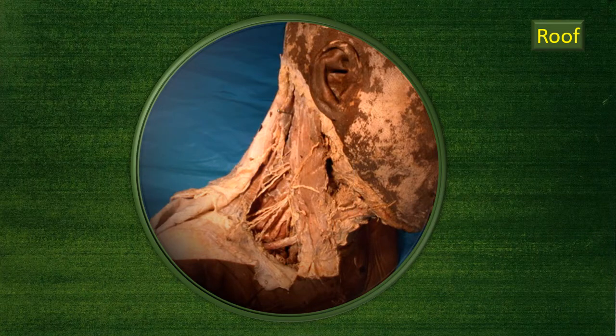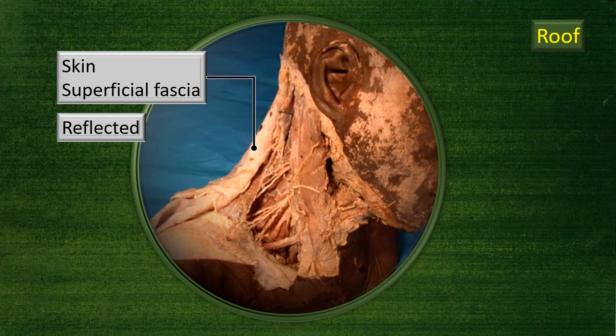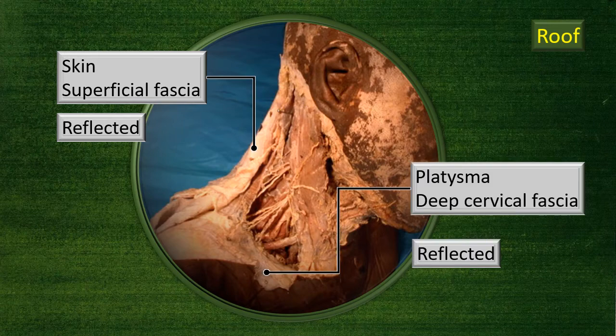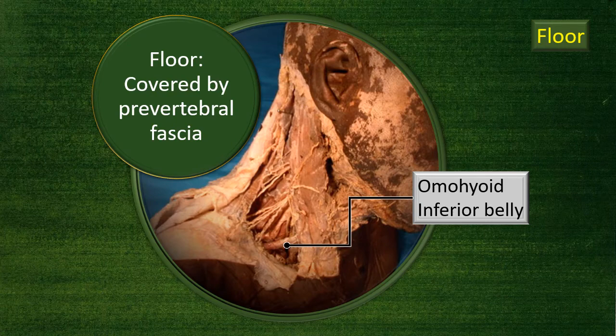The roof of the triangle is skin and superficial fascia, which has been removed in this dissection but is of theoretical interest. Deep to it is the platysma and the deep cervical fascia. As mentioned in other videos, these two layers are difficult to separate and are invariably removed as a single flap.